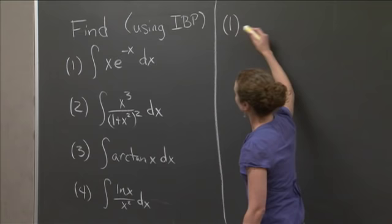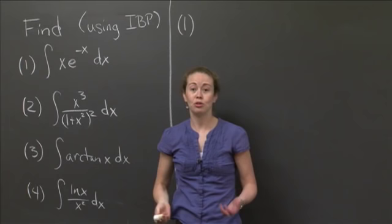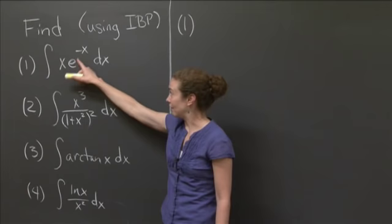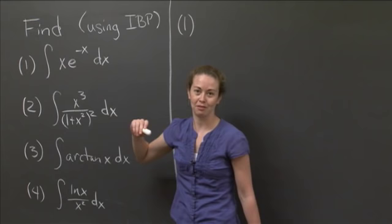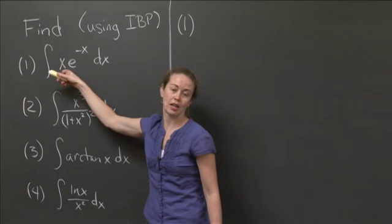If I have integral of x e to the minus x dx, it's very easy to make e to the minus x either u or v prime. It doesn't really matter, because an integral of e to the minus x is going to have an e to the minus x again, and a derivative is going to have an e to the minus x again with a minus sign in front in both cases. But this doesn't really change. So when we go up or down, it doesn't really matter if we integrate up or take a derivative. So really, we get to pick what we do with this e to the minus x based on what we want to do with the x.